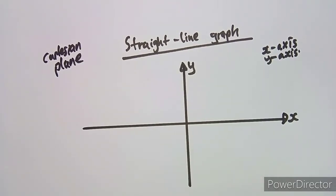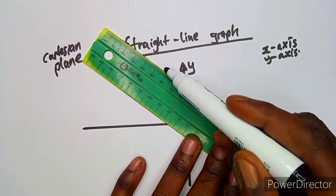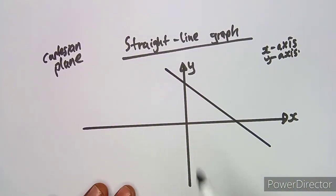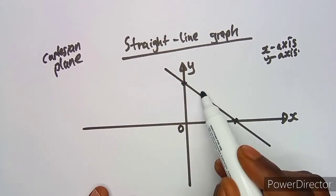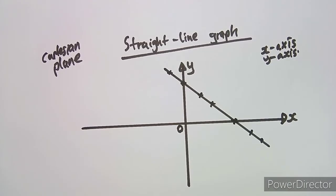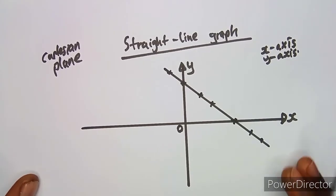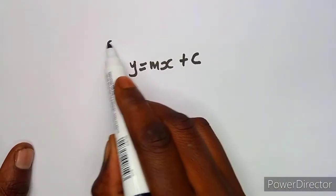We can draw a lot of functions or graphs on this Cartesian plane. The first type is a straight line — something like this. If this is the origin, which is the point (0, 0), a straight line graph can be drawn from points that lie on the graph. This straight line can be represented in the format y = mx + c, which is the general format.